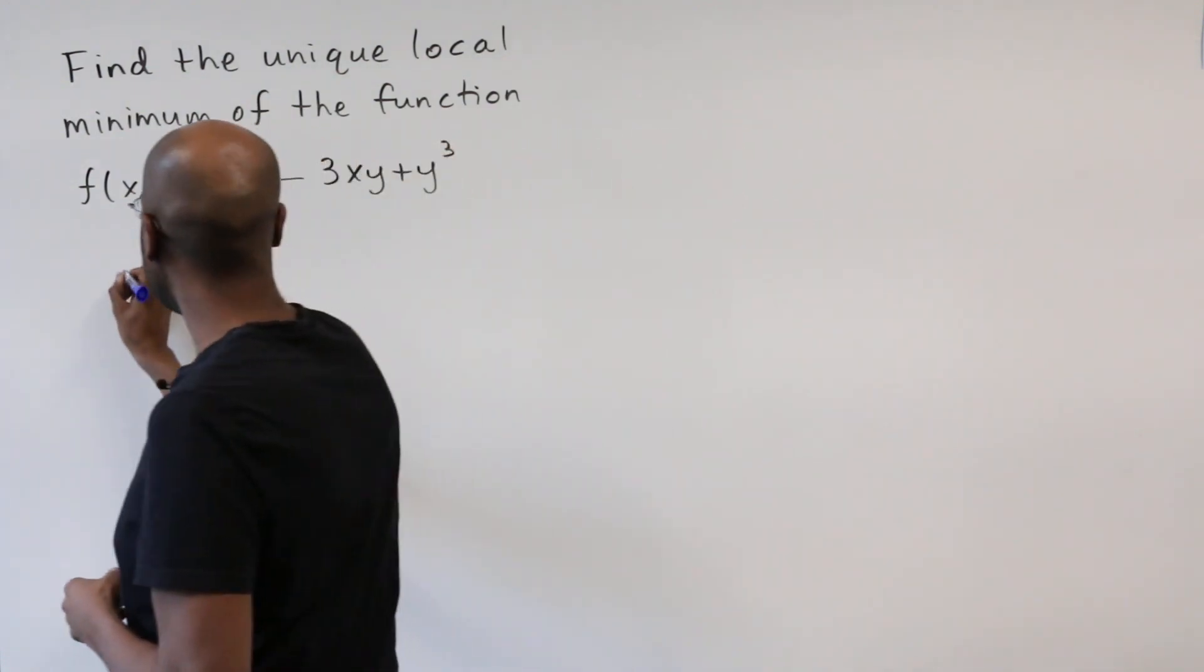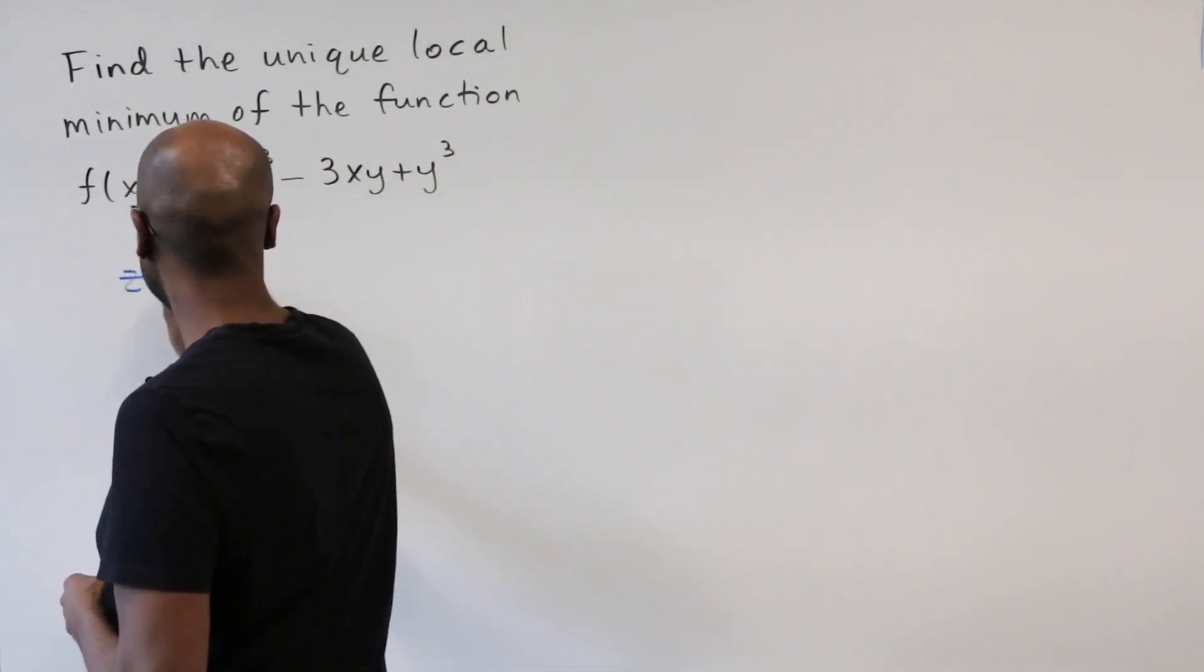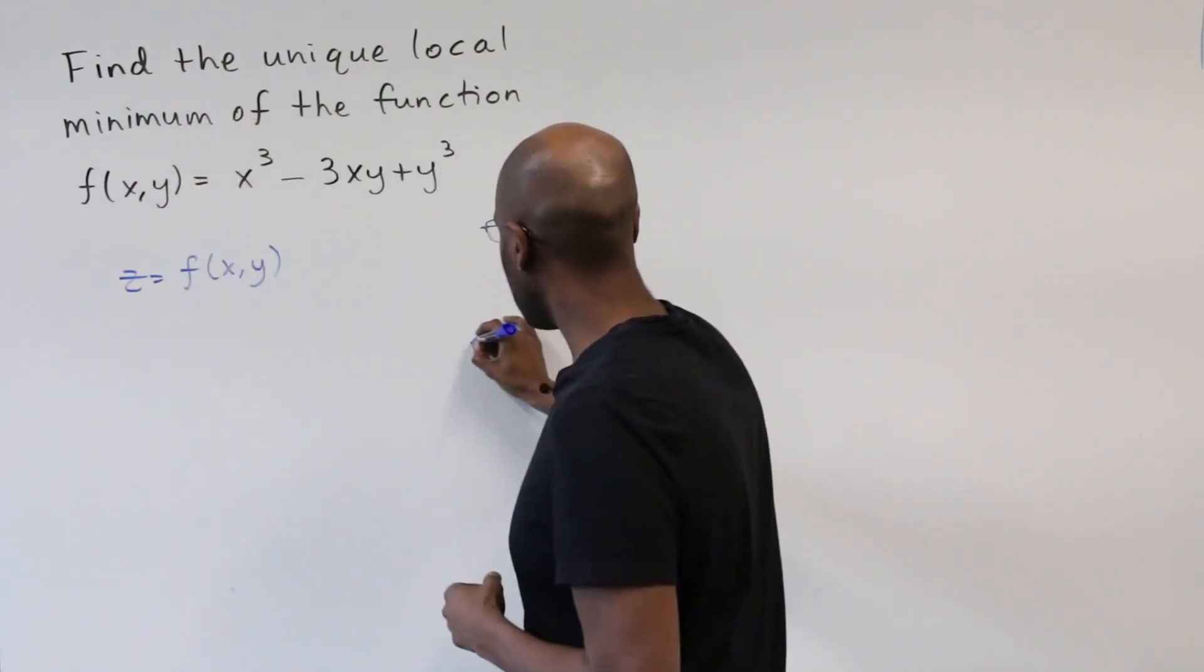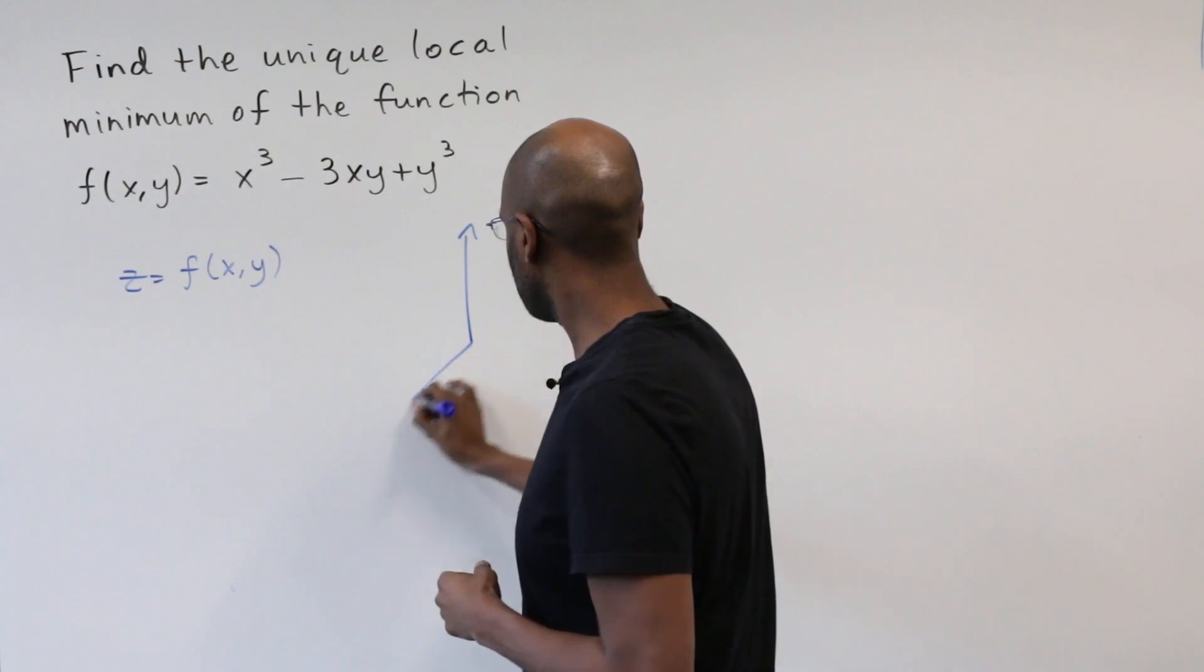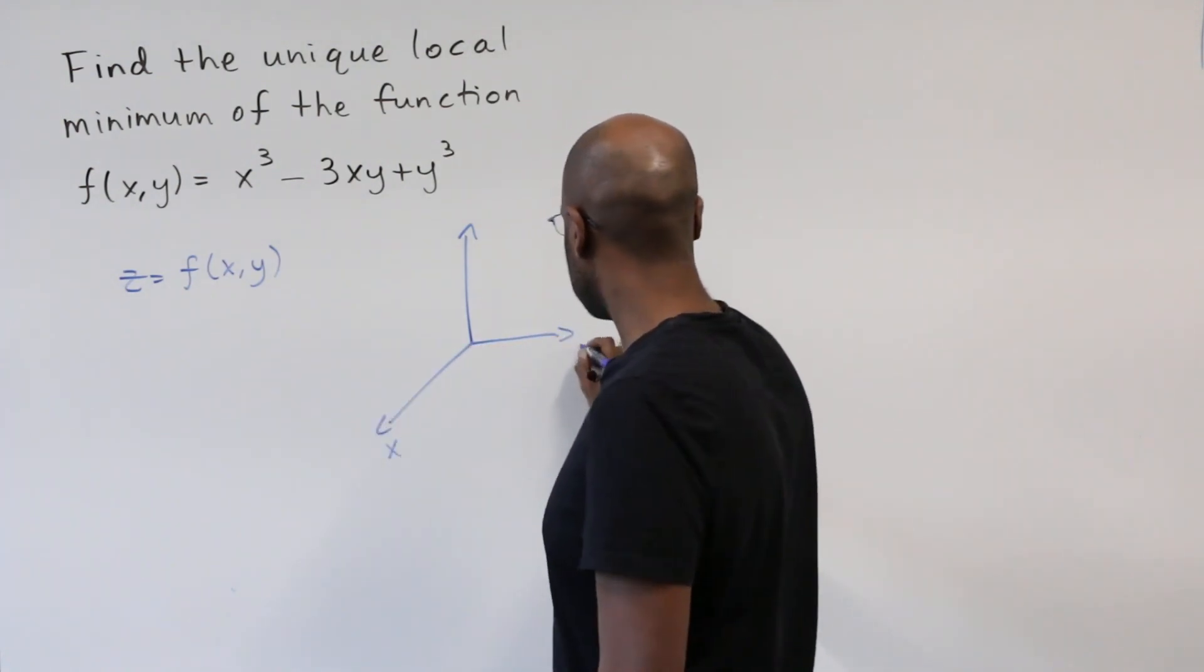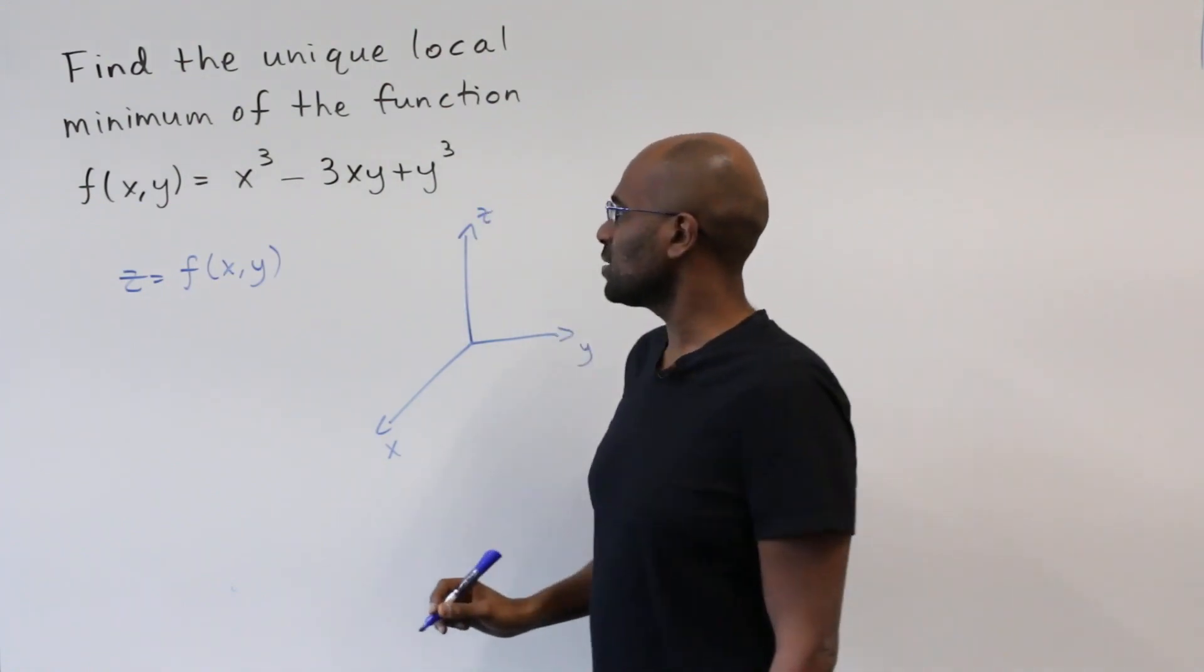To start, what I want to do is analyze the graph of this function z equal to f of xy. So this is a graph in 3D space, we have our axes x, y, and z, and I want to make an observation about this.